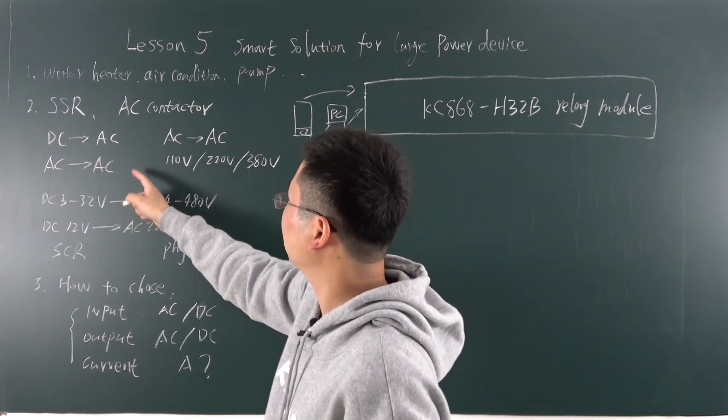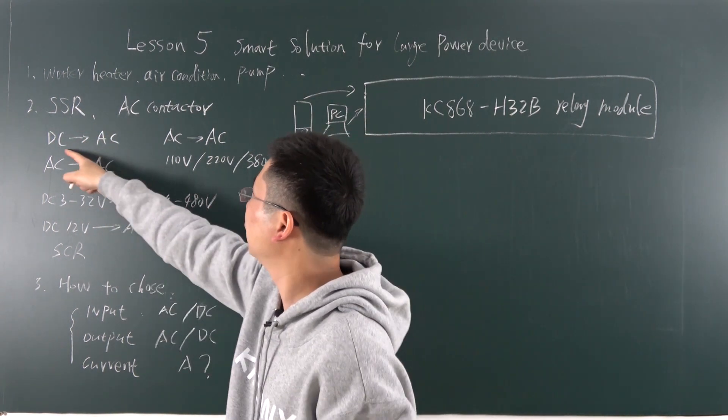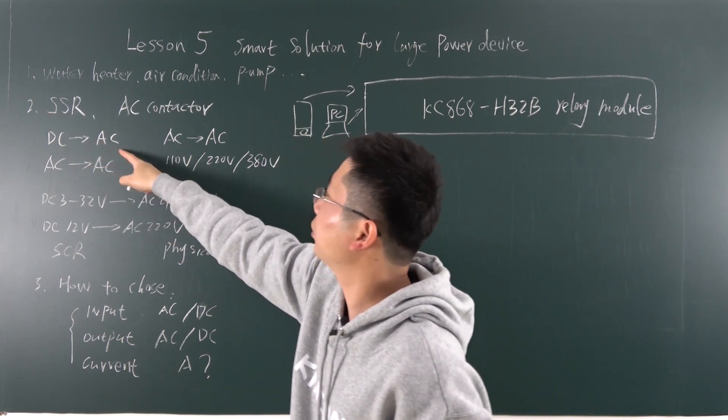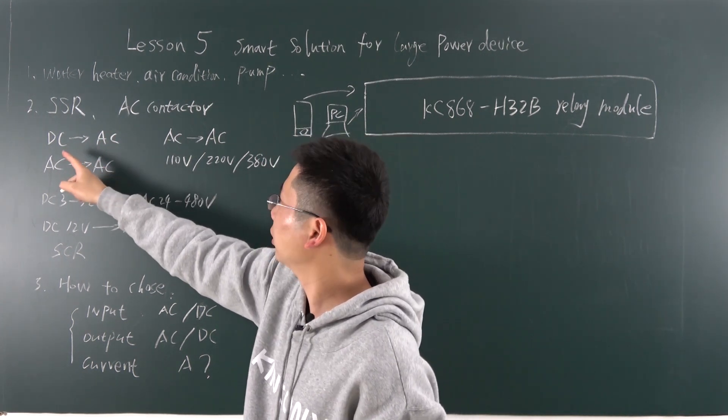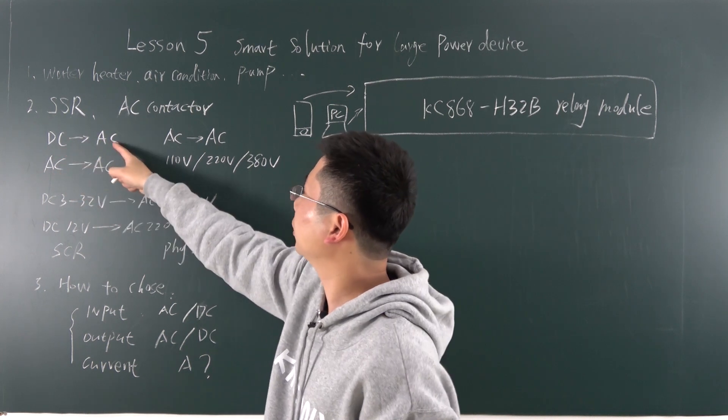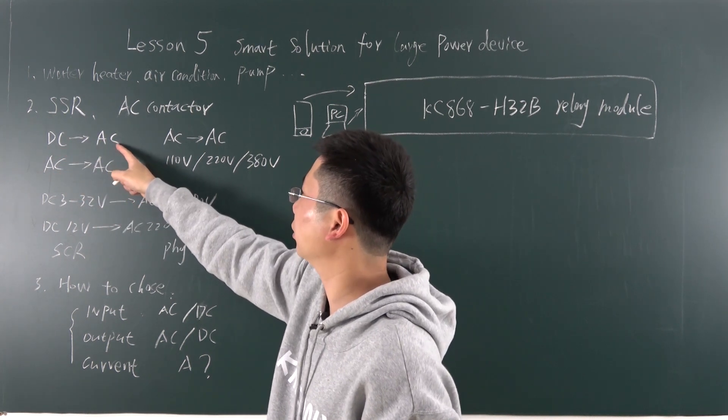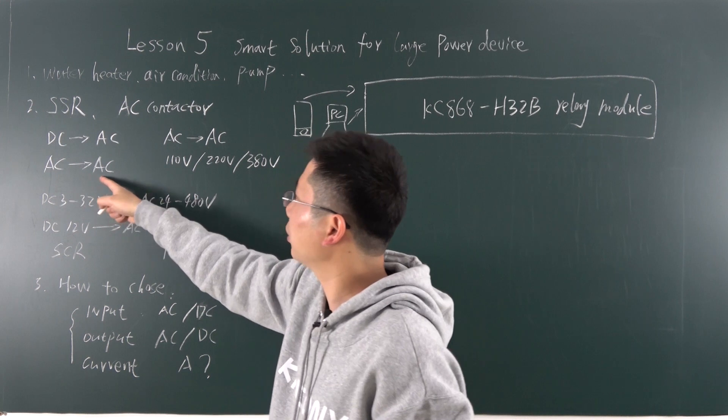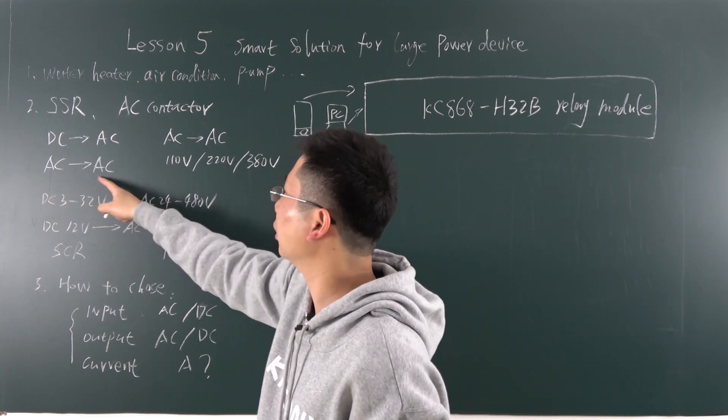This SSR will have two types. Like, use the DC to control the AC output. Just you can input the DC and output is to control the AC load. And this is AC, the AC input is AC, and the output is AC.